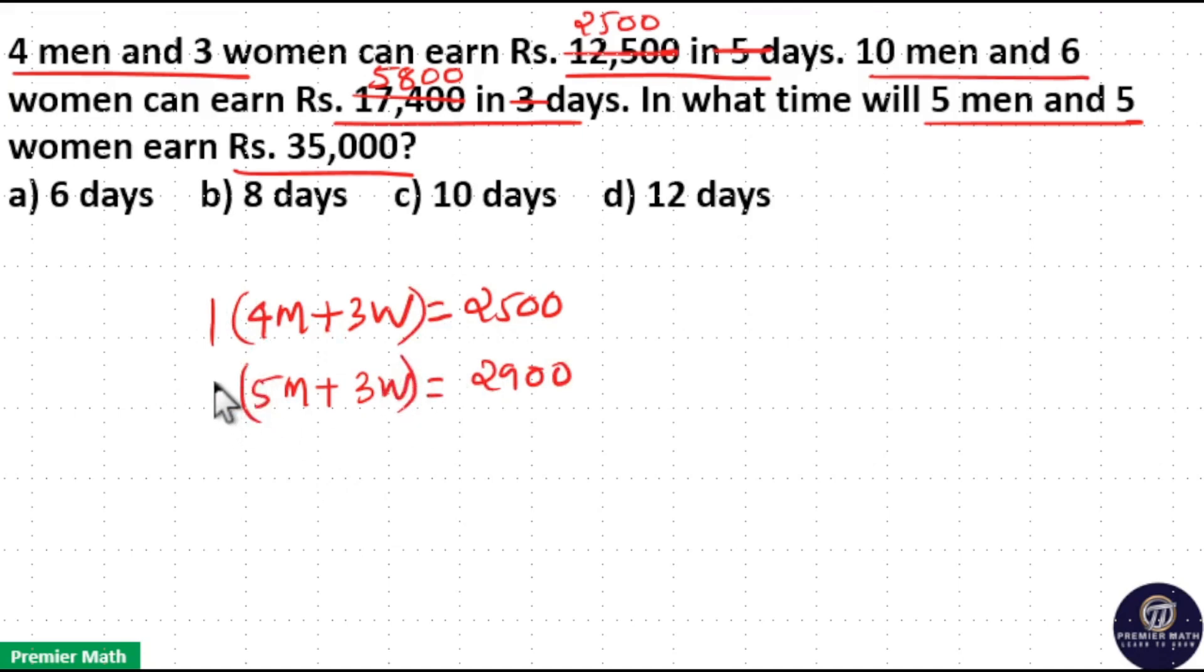Now we have to find out in how many days 5 men and 5 women will earn $35,000. Here if you take difference between 2nd and 1st you will get the answer. This is 5 men and 3 women, this is 5 men and 5 women. So just 2 women difference.